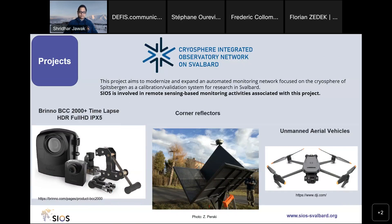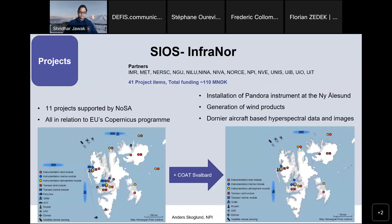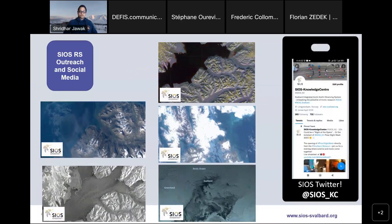We also have projects based on research infrastructure that support earth observation activities. For instance, the Cryosphere Integrated Observatory Network, which we started this year, will provide more opportunities for calibration and validation — for example, installing corner reflectors at three sites in Svalbard, and installing terrestrial cameras for calibration and validation of optical data such as terrestrial vegetation. A similar project has been going on for four years now, with around 11 projects supported by the Norwegian Space Agency, all relating to the EU Copernicus program — developing satellite-based products such as wind products and terrestrial vegetation in Svalbard.